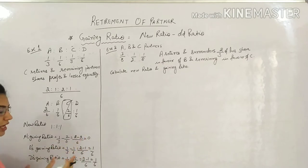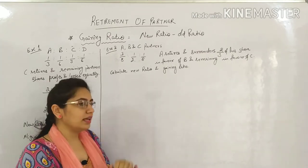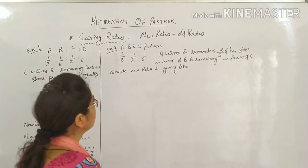And then you need to calculate D's gaining ratio. New minus old, new is 1 by 3, old was 1 by 6. Taking LCM, this is also 1 by 6. So this means A didn't gain anything, so in gaining ratio we won't even mention their name. So it becomes simple for you: B and D. So the answer is 1 by 6 is to 1 by 6, that is 1 is to 1. They have this gaining ratio. This can happen - zero can come, there's nothing confusing about it.